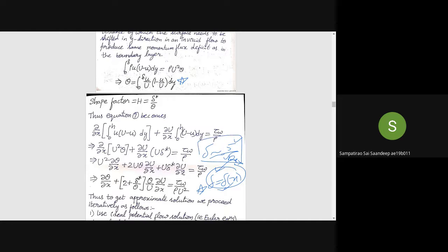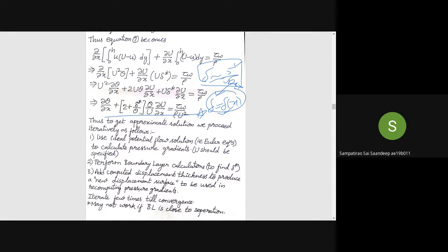So in general how we proceed is: we first find this U or the ideal solution to calculate the pressure gradients in U, and then we perform boundary layer calculations to find delta star, and then add the computed displacement thickness to produce a new displacement surface to be used in recomputing gradients and iterate this a few times in convergence.